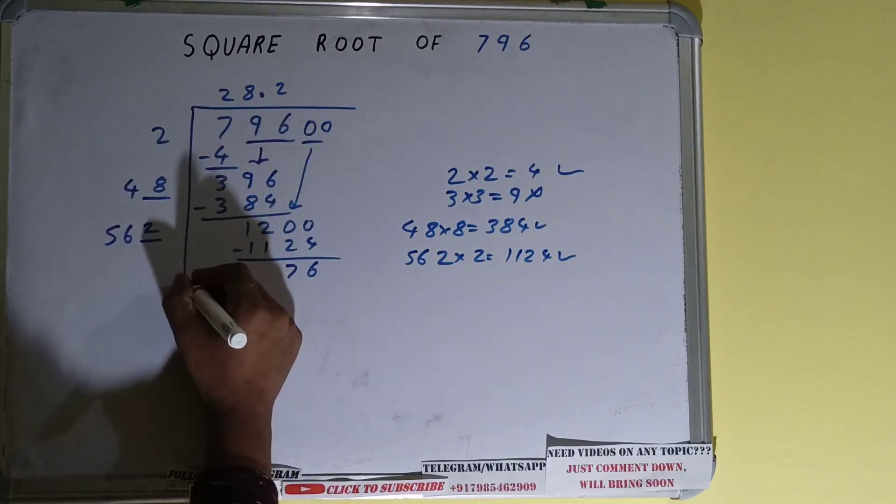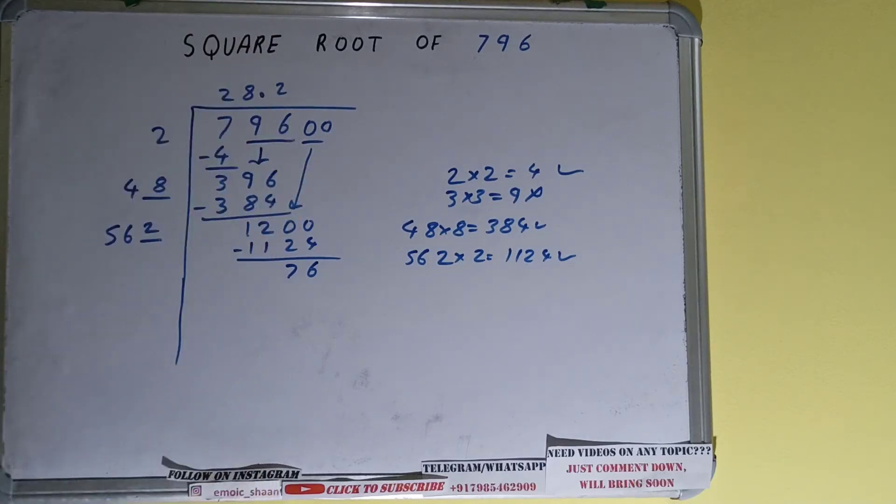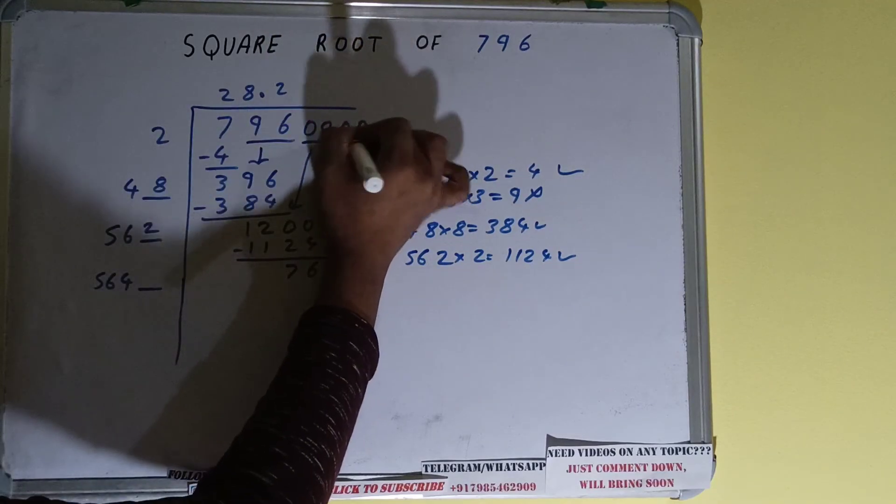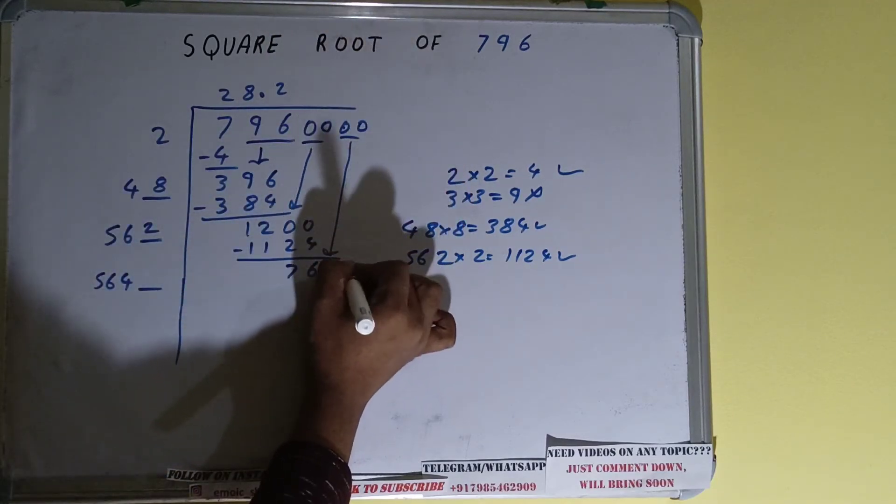And 76 will be left. Now 562 times 2, so add both. 562 plus 2 will be 564 and one digit extra. This number we need to make it big, so bring the next pair of zeros down and it will become 7600.